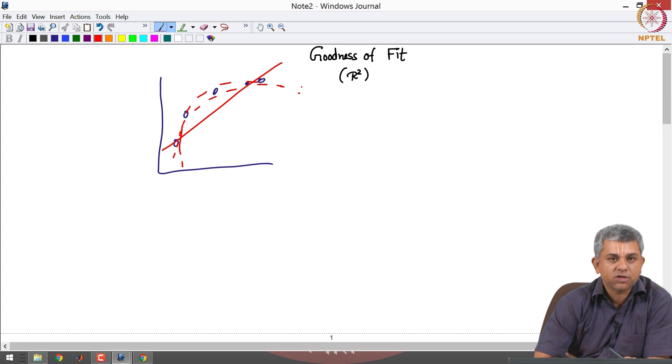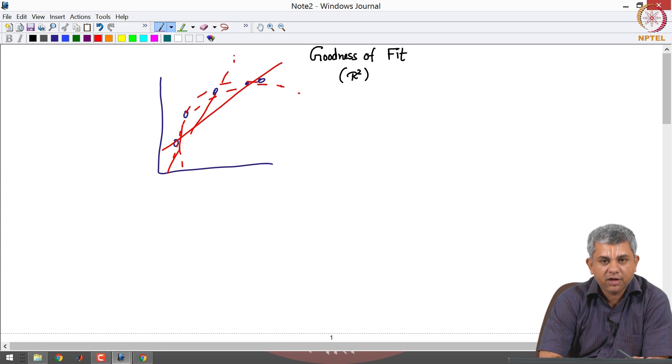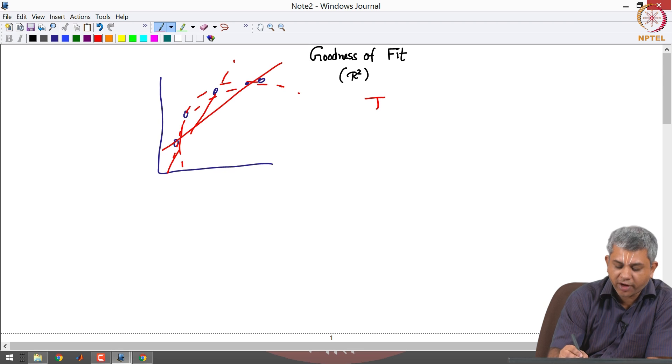But sometimes it is not really visually obvious, especially if you are dealing in high dimensions. For example, if I have this line versus this line, which one is a better fit? So immediately we might say that obviously I should look at J to find out how good a fit is.